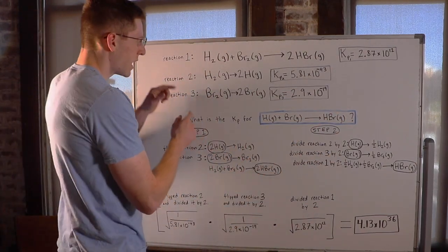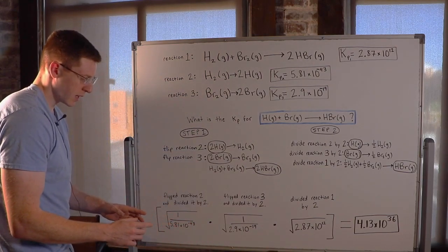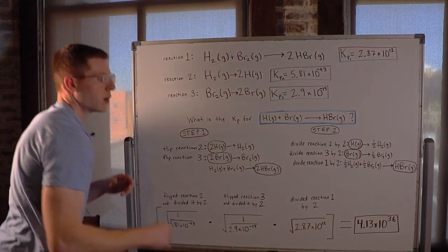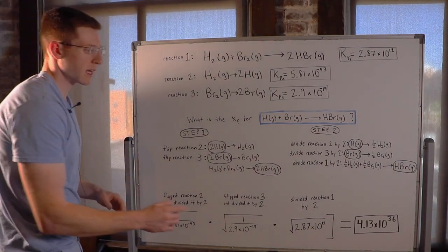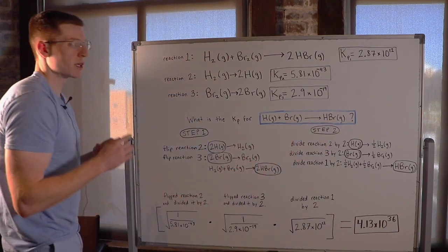Finally, we know when we add three reactions together, we have to multiply all of their Ks together. So once you do all of this on your calculator right here, you'll end up with 4.13 times 10 to the 36th power for the Kp of this reaction in blue here.